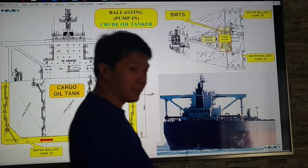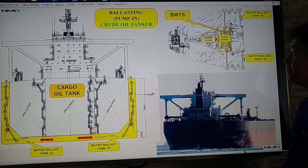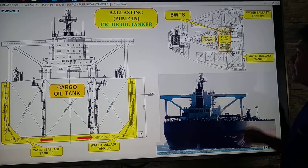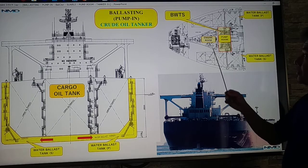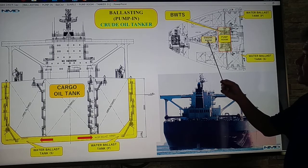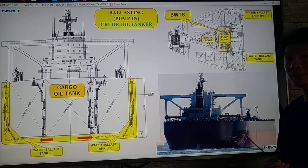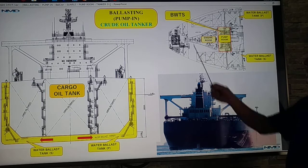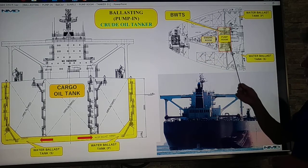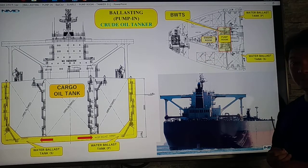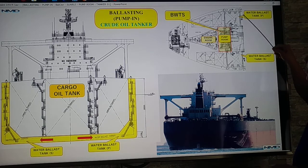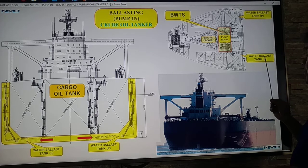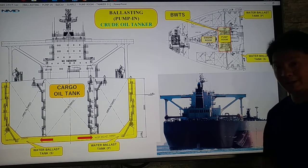Just to have an idea of the location — we have here our crude oil tanker, with the engine room and the pump room. Our ballast water treatment system filter should be inside the pump room. We have the water ballast tank on port side and water ballast tank on starboard side.